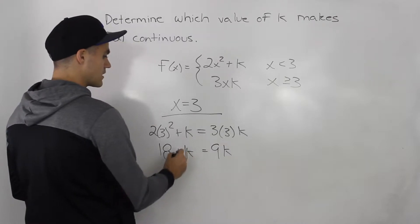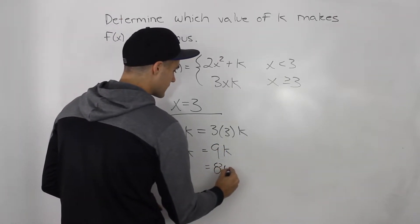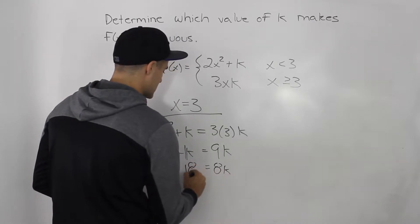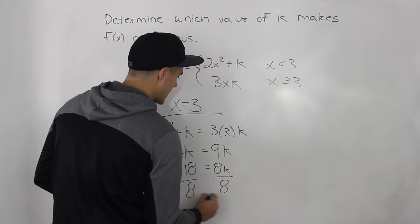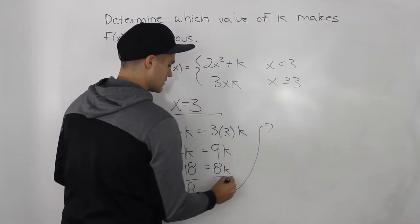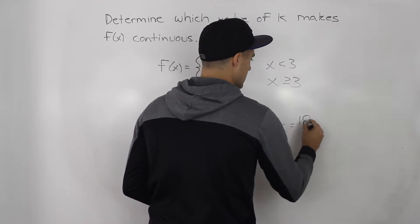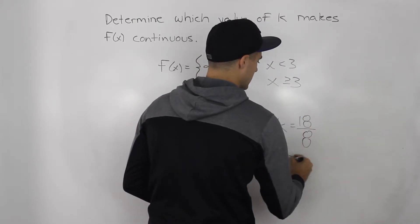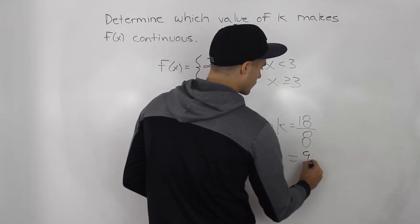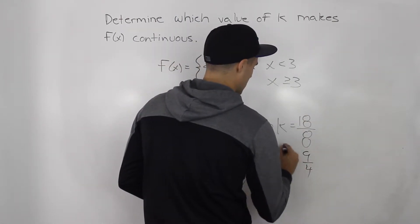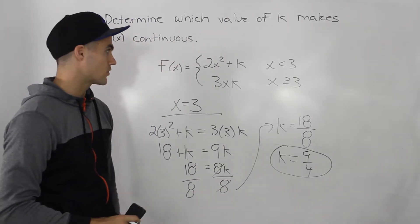So this is like 1k here. Bring it over, so 9k minus 1k gives us 8k. This equals 18. Divide both sides by 8 — the 8s cancel out, so k equals 18 over 8, and then we can simplify this fraction into 9 over 4. Super simple. k equals 9 over 4.